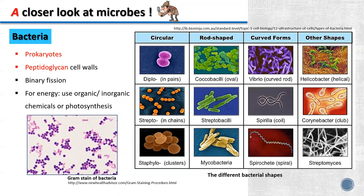Now let's look at each microorganism in more detail. The first one is bacteria. Bacteria are unicellular organisms. The cells are described as prokaryotic because they lack a nucleus. They exist in four major shapes: bacillus or rod shape, coccus or spherical shape, spirilla or spiral shape, and vibrio or curved shape.